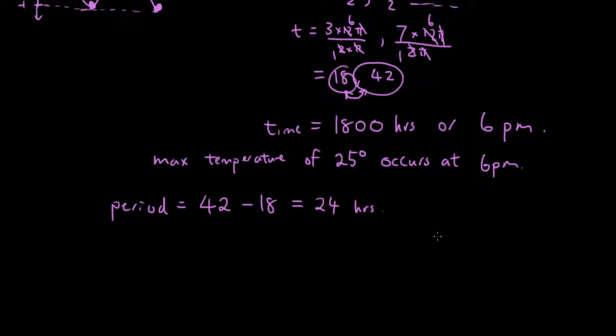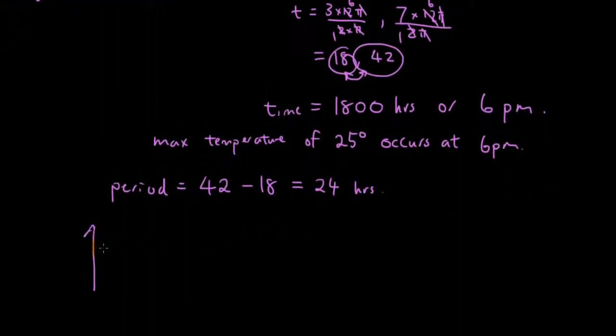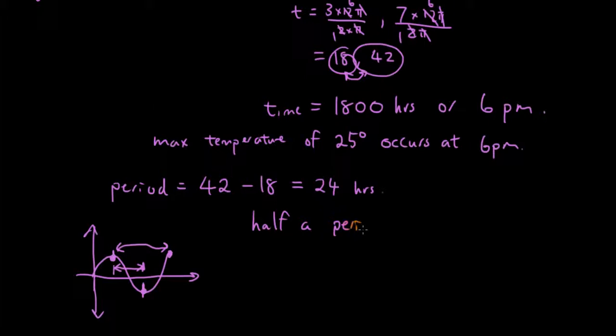If you remember for a sine curve, any sort of sine curve, if we have the maximum and the minimum, the time it takes to go from a maximum to the minimum will be half the period. Because from one maximum to another maximum, that will be the whole period. This distance here will be the whole period, so here will be half a period from a maximum to a minimum.